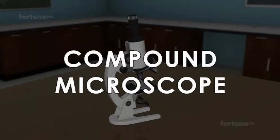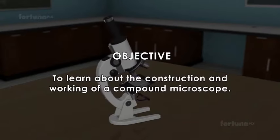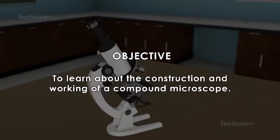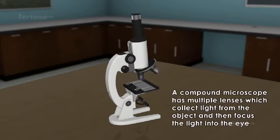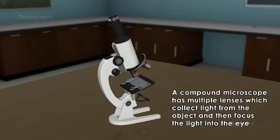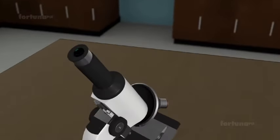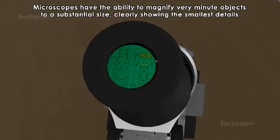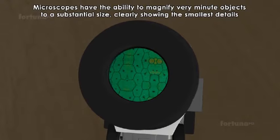Compound microscope. To learn about the construction and working of a compound microscope. A compound microscope has multiple lenses which collect light from the object and then focus the light into the eye. These microscopes have the ability to magnify very minute objects to a substantial size, clearly showing the smallest details.